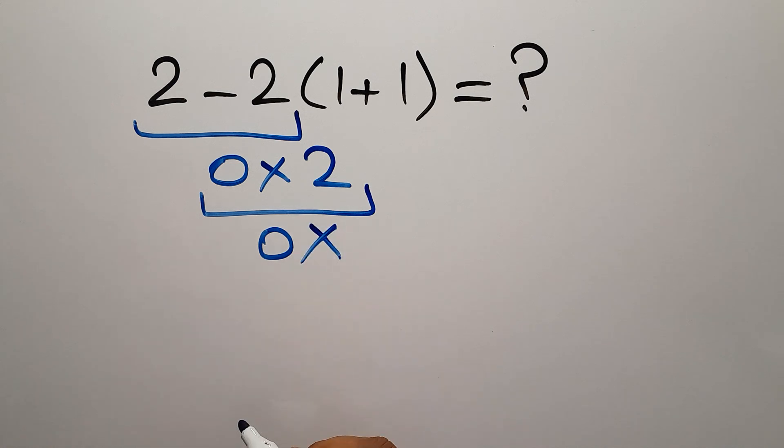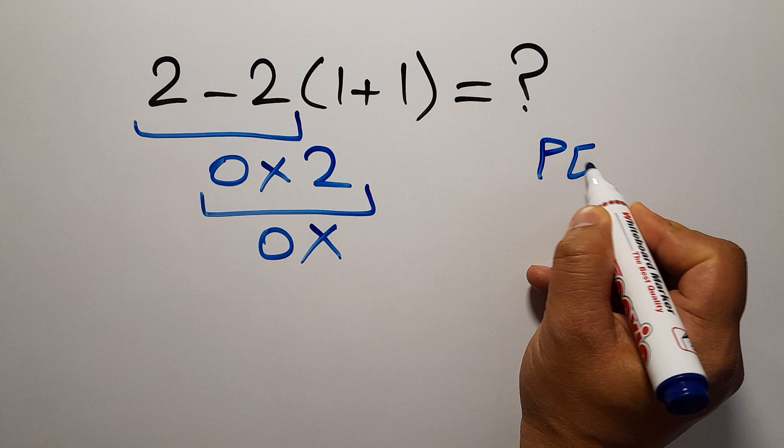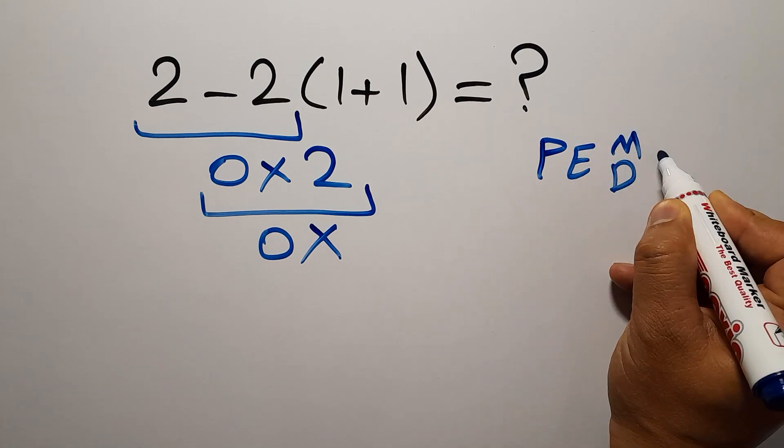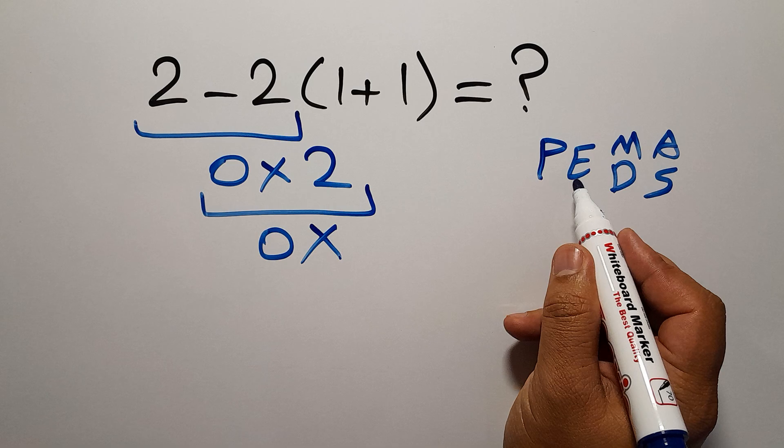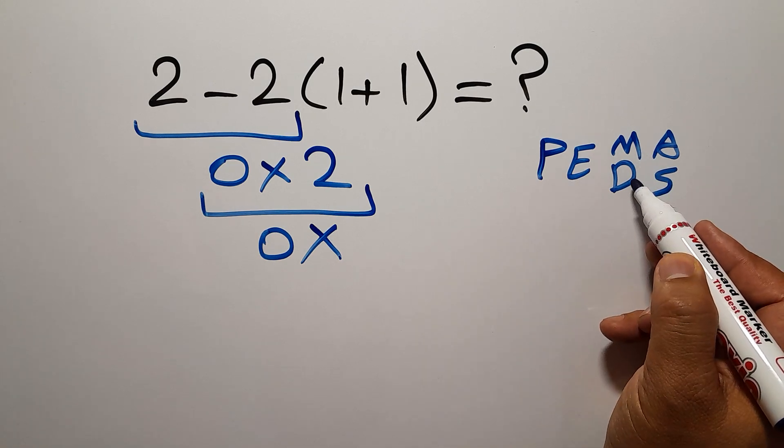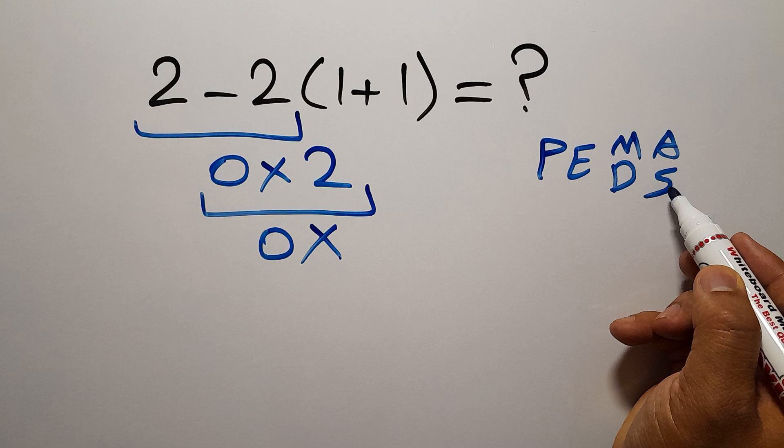But this answer is not correct because according to the order of operations, which is PEMDAS. P stands for parentheses, E stands for exponents, M and D stands for multiplication and division, and A and S stands for addition and subtraction.